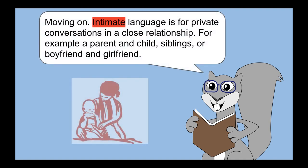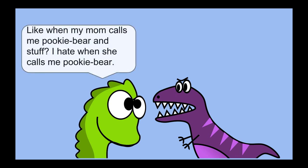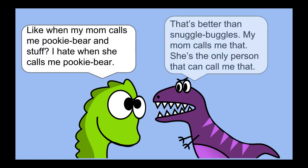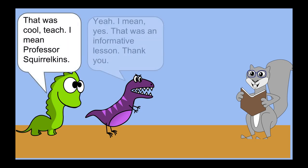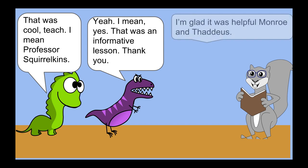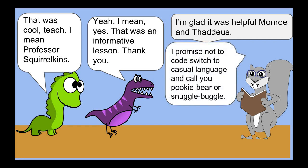Intimate language is for private conversations and a close relationship. For example, parent and child, siblings, or boyfriend and girlfriend. Like what my mom calls me — pookie bear? I hate when she calls me that. That's better than snuggle buggles — my mom calls me that. She's the only person that can call me that. That was an informative lesson. Thank you. I'm glad it was helpful, Monroe and Thaddeus. I've promised not to code switch to casual language and call you pookie bear and snuggle buggles.